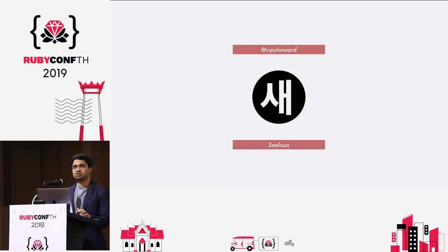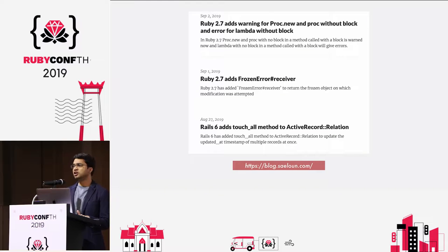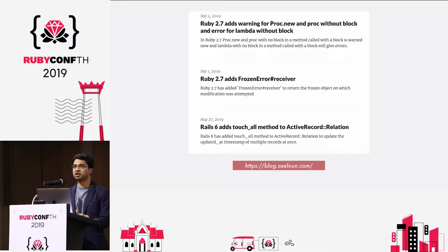My name is Vipul. I go on Twitter as Vipul and Sward. I run this consulting company called Saloon, which is a new one — we are still growing. We tend to blog a lot on various things, from Ruby to Rails, as well as whatever new things that we are working on.